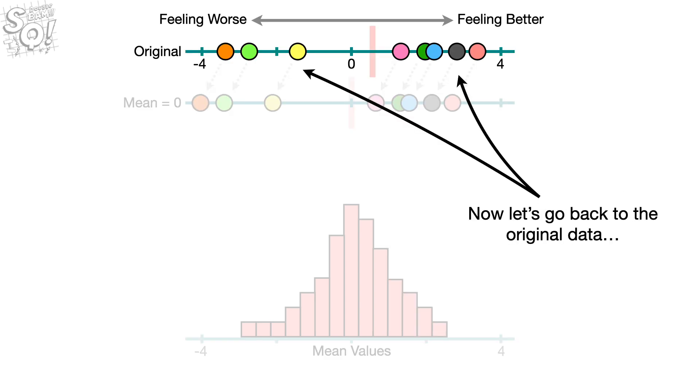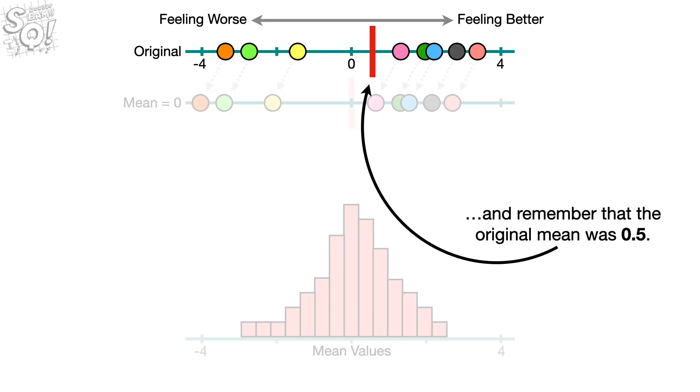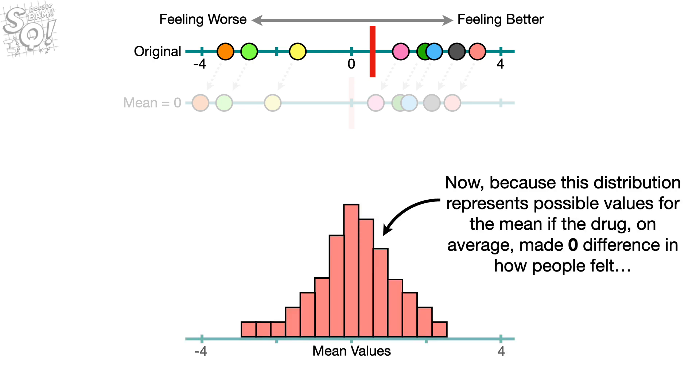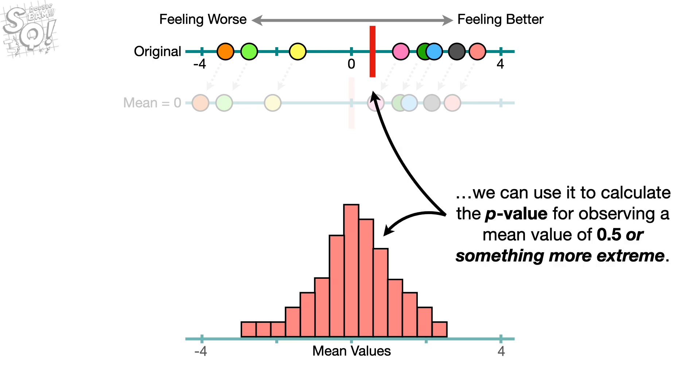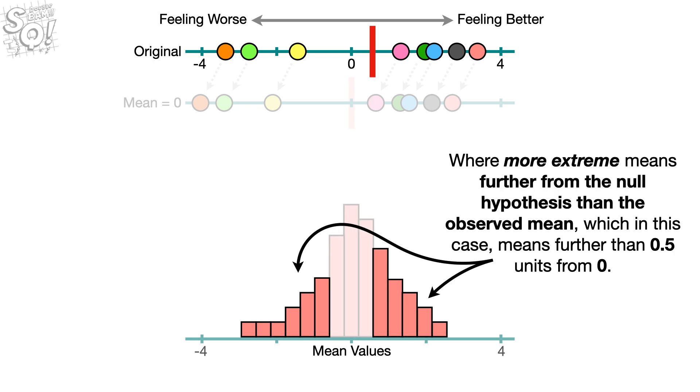Now let's go back to the original data. And remember that the original mean was 0.5. Now, because this distribution represents possible values for the mean if the drug, on average, made zero difference in how people felt, we can use it to calculate the p-value for observing a mean value of 0.5 or something more extreme. Where more extreme means further from the null hypothesis than the observed mean, which, in this case, means further than 0.5 units from zero.